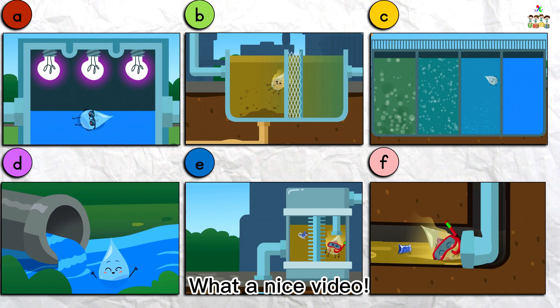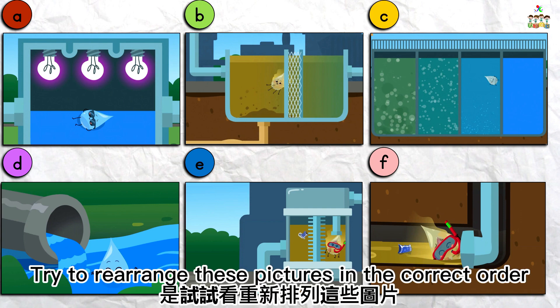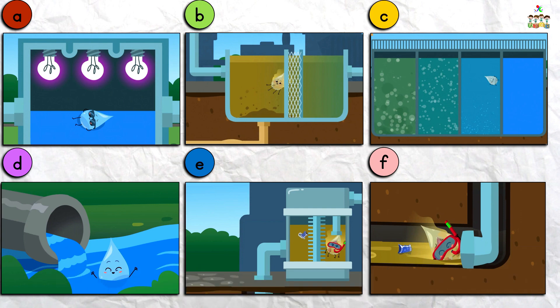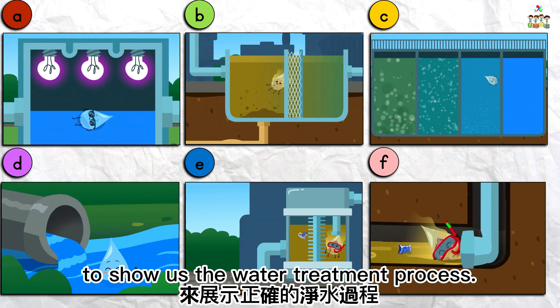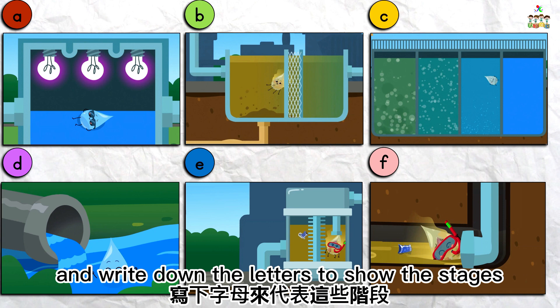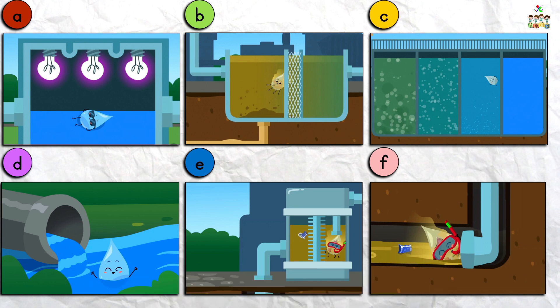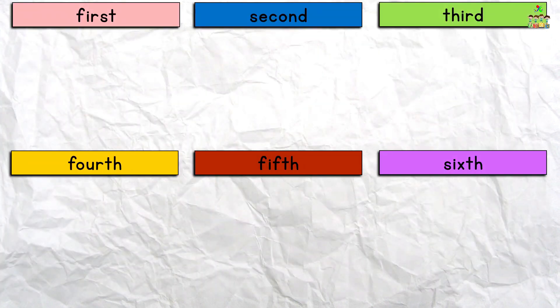What a nice video. Now, can you remember how Waterdrop got clean? Try to rearrange these pictures in the correct order to show us the water treatment process. You can pause the video and write down the letters to show the stages from start to end. The answer will come in 5, 4, 3, 2, 1. Ok, let's see the answer.